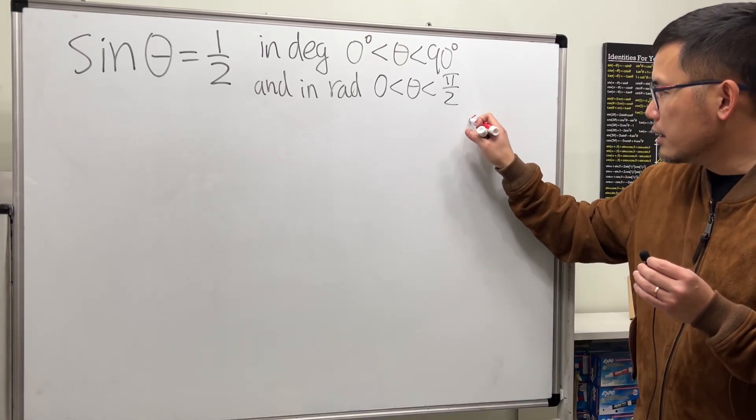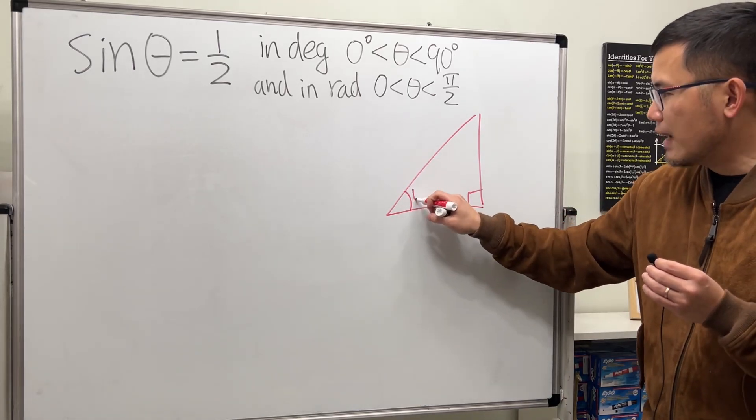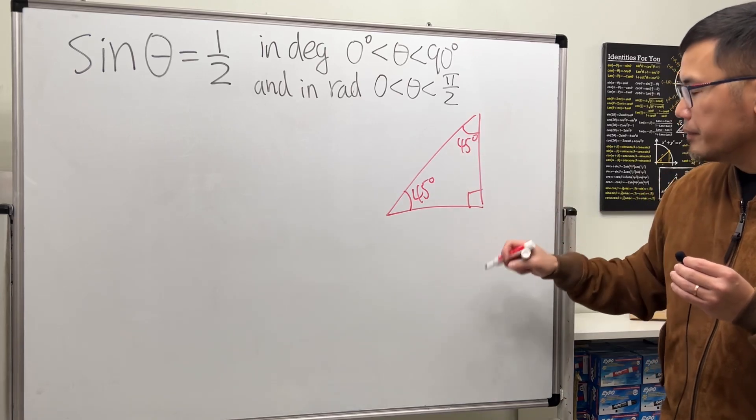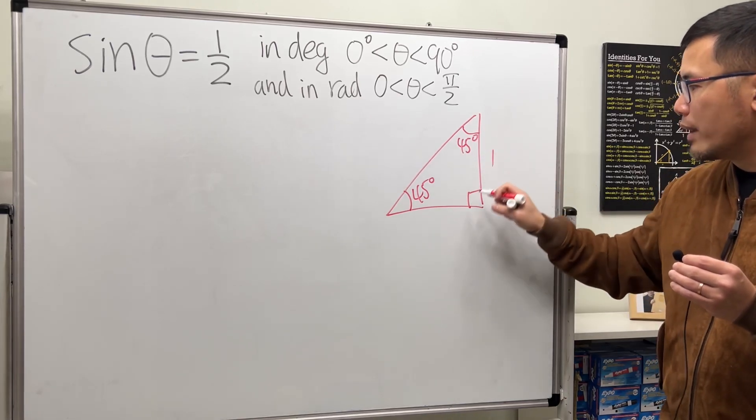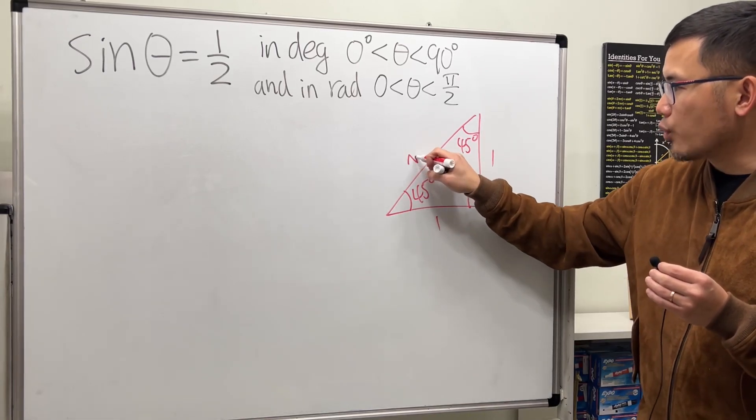The first one is the 45-45-90 special right triangle. 45 degrees here, and then 45 degrees here. And the split of the sides are 1-1 because they are the same. And then the hypotenuse is square root of 2.